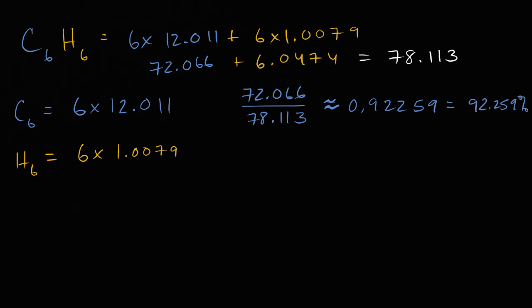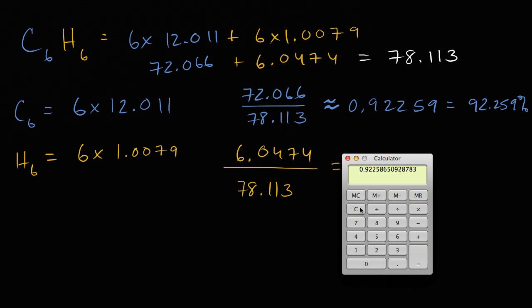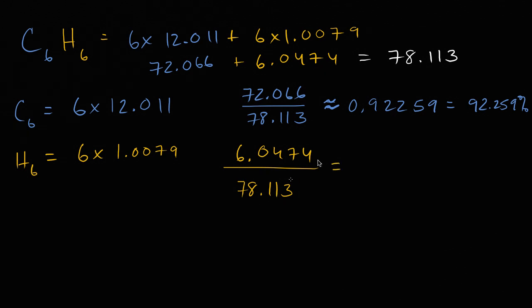Now the remainder is going to be hydrogen, and of course we can figure that out. That's going to be 6.0474 divided by 78.113. Let me clear it out. 6.0474 divided by 78.113 equals 0.07741. I have five significant digits in either case, so this is going to be 0.07742.